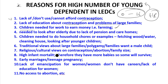Children need to work to earn money, for example in farming, and are needed to look after the elderly due to lack of pensions and care homes. Children also do household chores such as fetching water, fetching wood, and looking after younger siblings. There are traditional views of large families, polygamy, and families wanting a male child. Religion is against contraception and abortion. High infant mortality means people have more babies so some will survive. Early marriages, teenage pregnancy, lack of emancipation of women, lack of education for women, and no access to abortion also contribute.